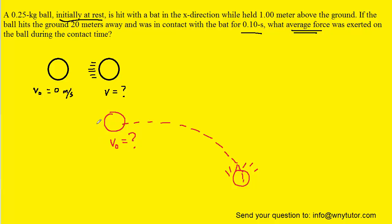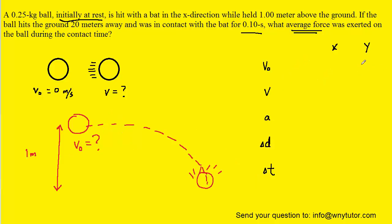We'll set up the projectile motion aspect. The height is given to us as 1 meter, so we can label that. Whenever you have a projectile motion question, it's a good idea to set up a table. In our table, we have the initial velocity, final velocity, acceleration, displacement, and time — for both the y and x directions.